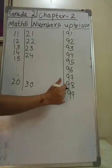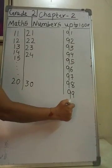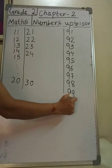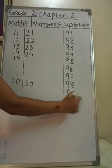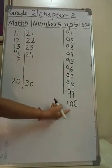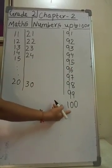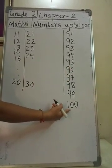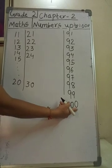What comes after 99? 100. 100 is a three-digit number — 1, 2, and 3 digits.